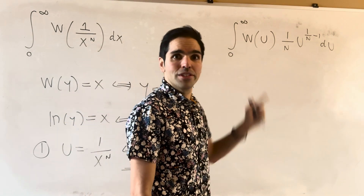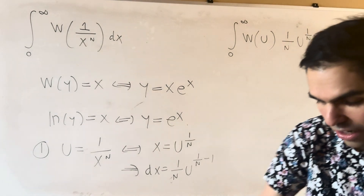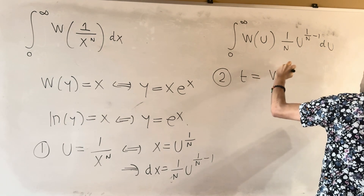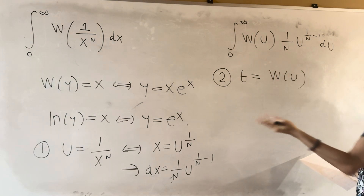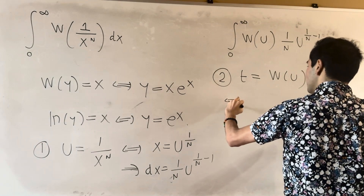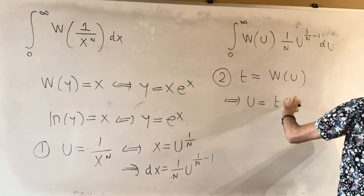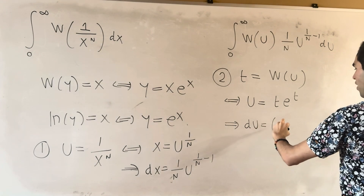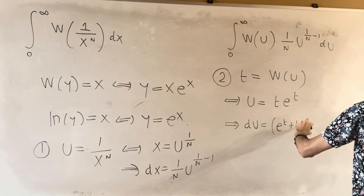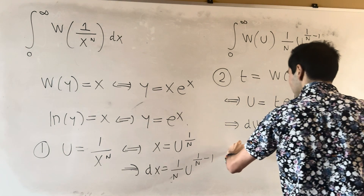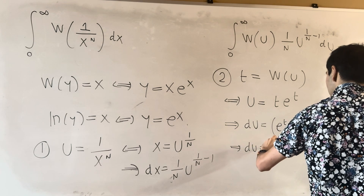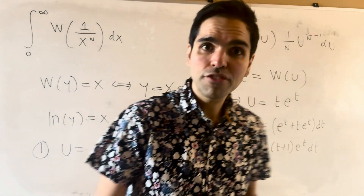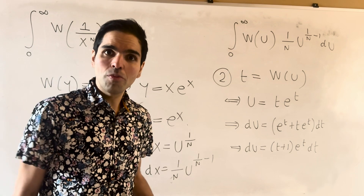Next, we substitute t = W(u). Remember, W inverts x·eˣ, so that's the same thing as u = t·eᵗ. Then du, using the product rule, becomes eᵗ + t·eᵗ dt, which simplifies to (t + 1)·eᵗ dt.